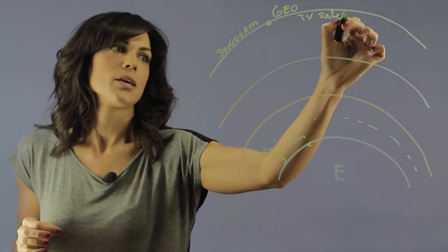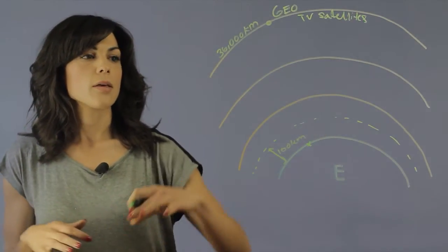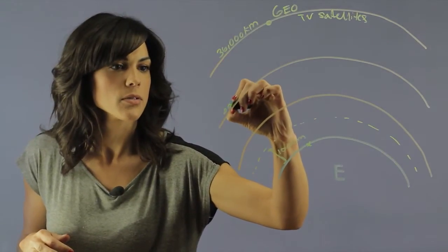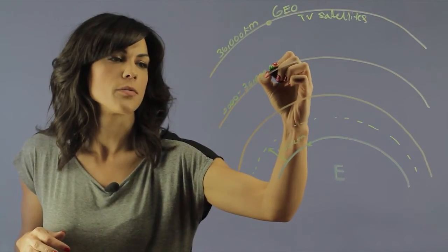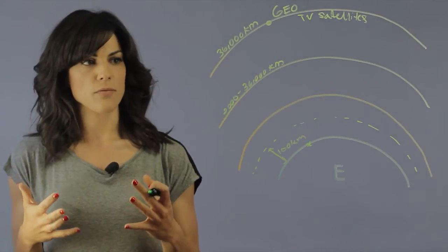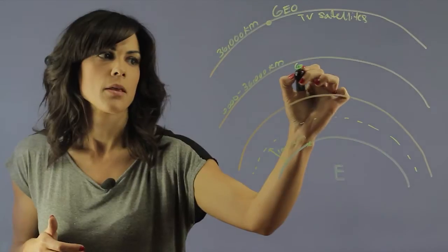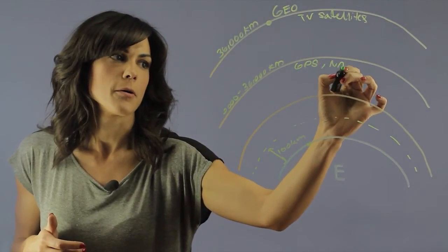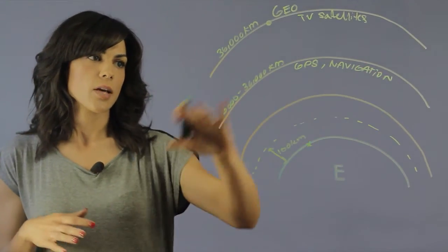Now the middle part is between 2,000 and 36,000 kilometers above the surface. And this is medium Earth orbits. And this is where you actually find GPS and navigation. So a lot of communication stuff, military aircraft and so forth. So this is kind of the layer.